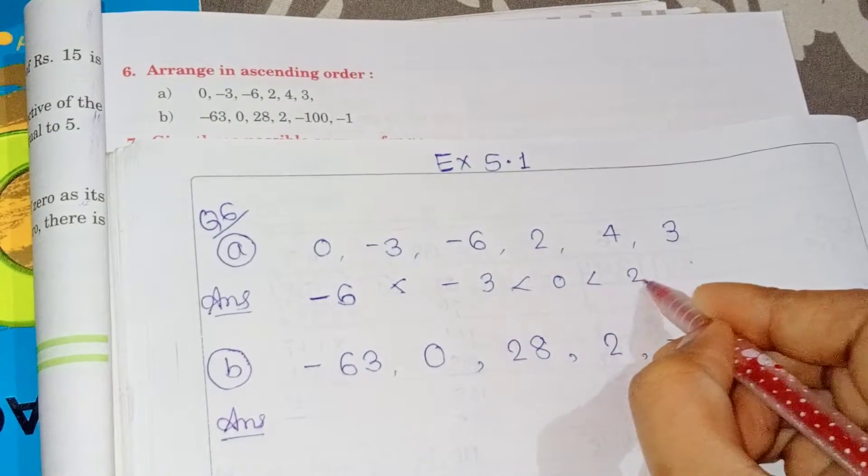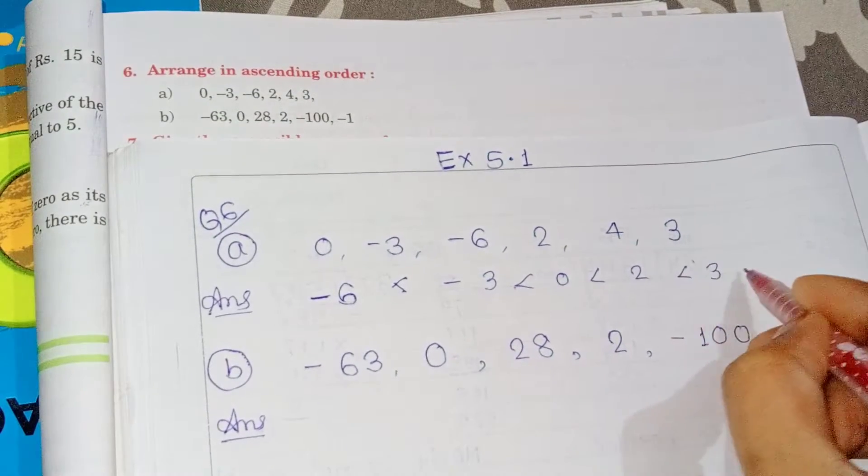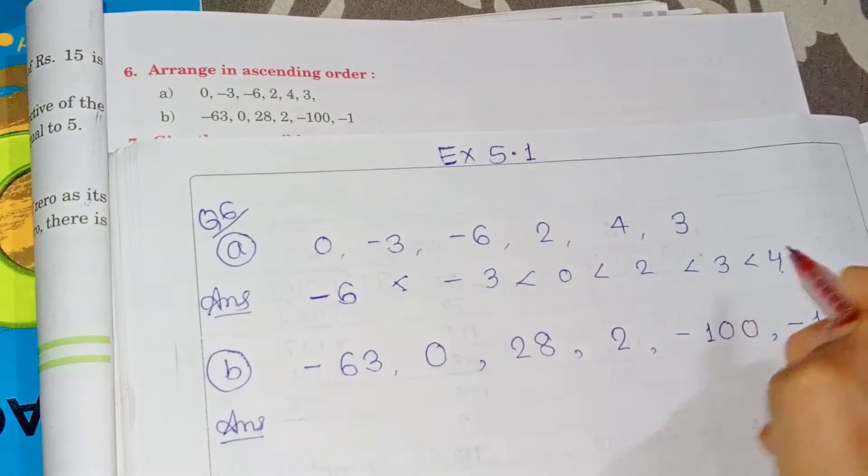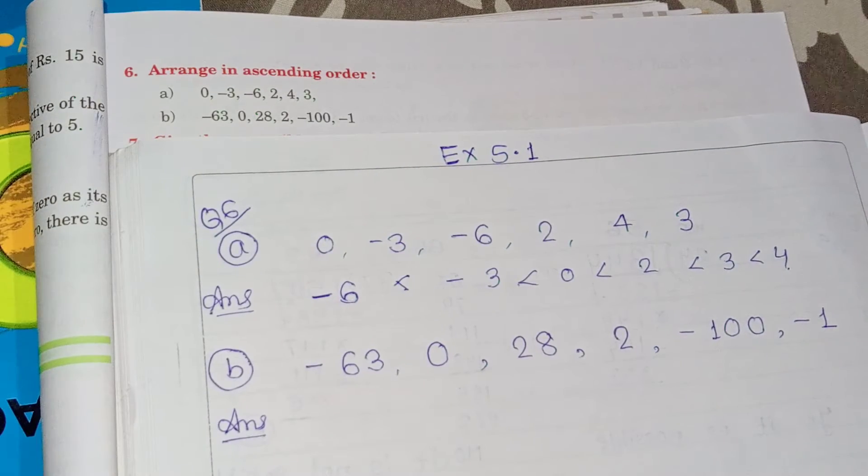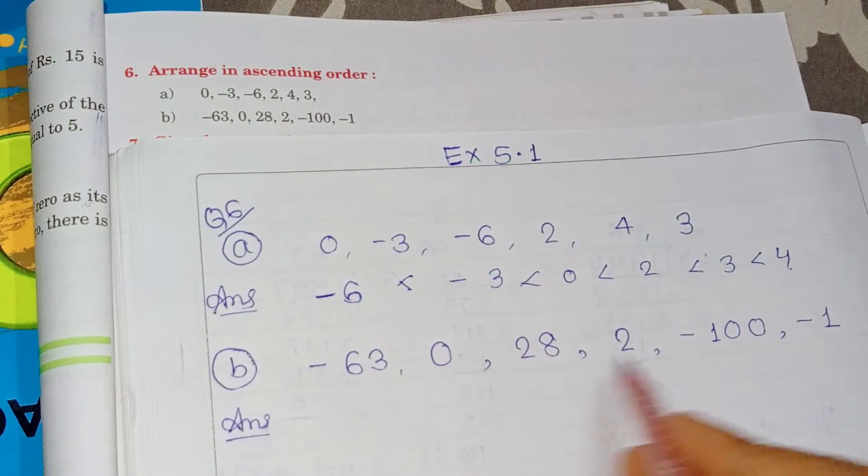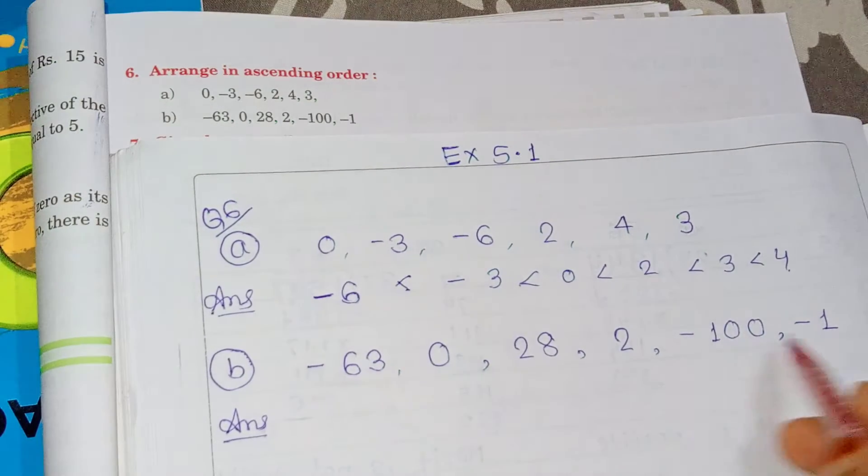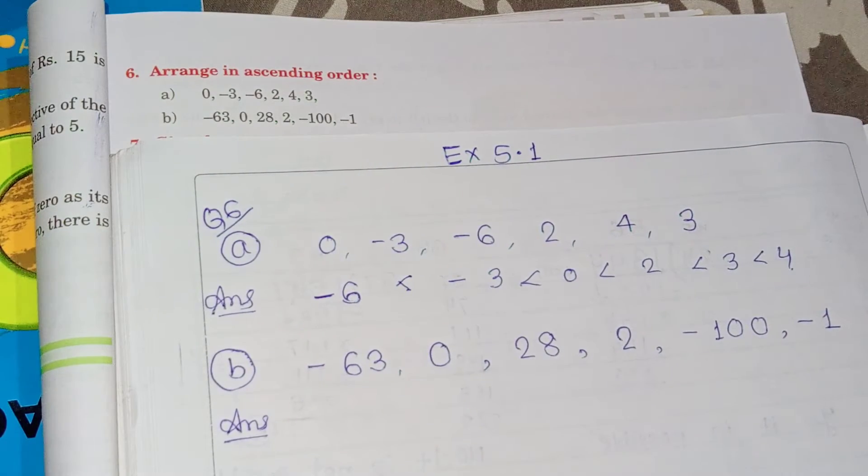We have to arrange the next question. We have a lot of numbers. In the negative numbers, the number that is the biggest, its value will be the smallest.